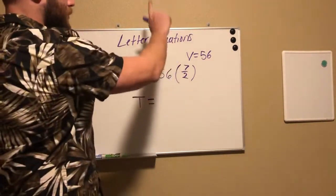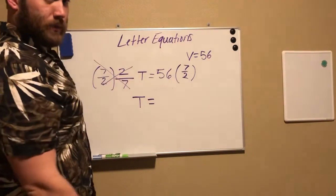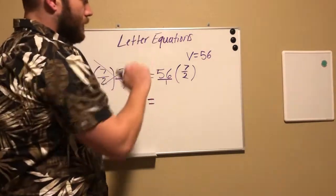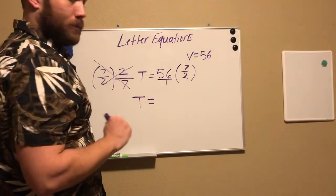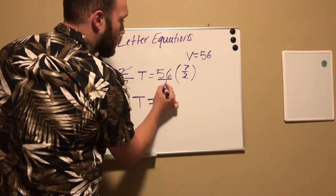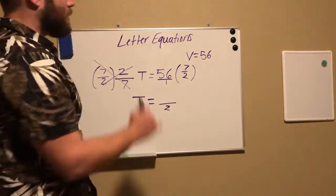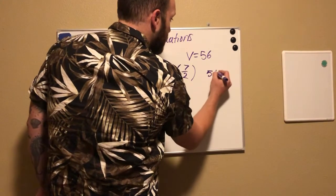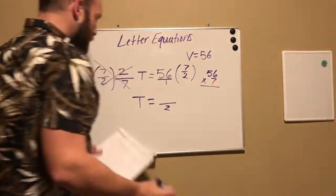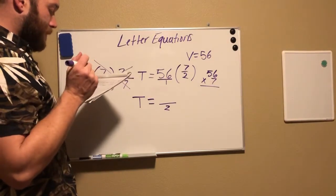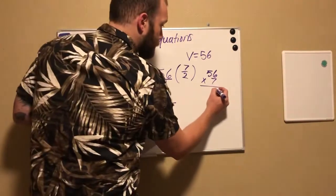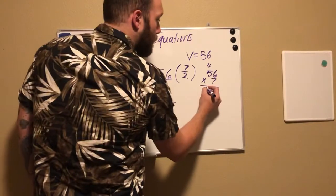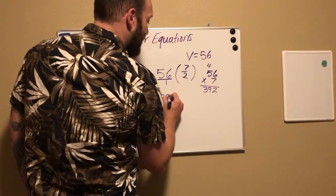And what do I need to do to 56 to multiply it by a fraction? Put it over one. And to solve this, I multiply straight across. So easy part first: one times two is two. Next up, 56 times seven - a little bit lengthier, you might want to work this on the side. So we have 56 times 7. We know that six times seven is 42. Seven times five is 35 plus four is 39. So now I have 392 halves.